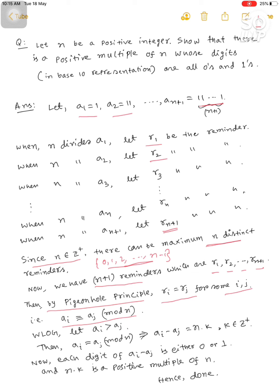Then a_i congruent to a_j mod n, and this implies a_i minus a_j equals n times k for some k belonging to Z+.